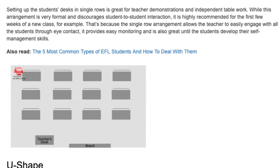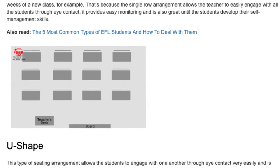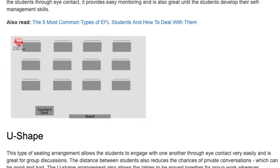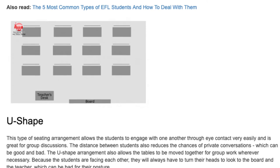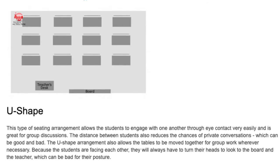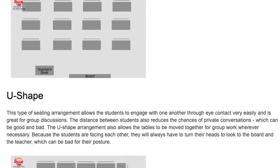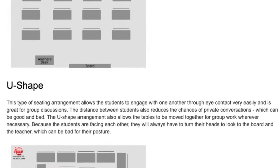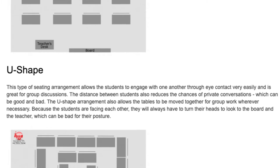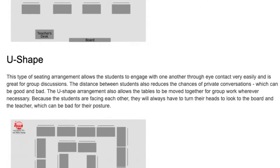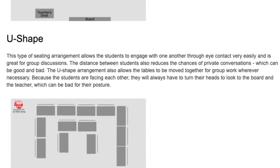Double rows. With this seating arrangement, the students are facing each other. This way, they can easily interact and communicate with one another. The double row arrangement is great for speaking classes and classes with a lot of student talk time, but can be disruptive for other classes. That's because off-task interaction happens very easily, and it is harder for the teacher to gain eye contact with individual students.